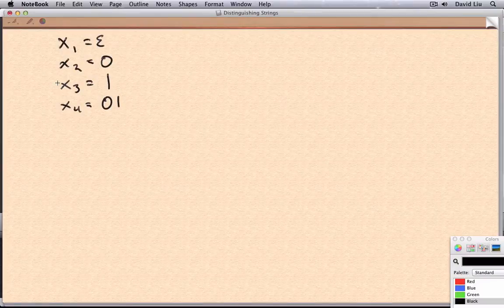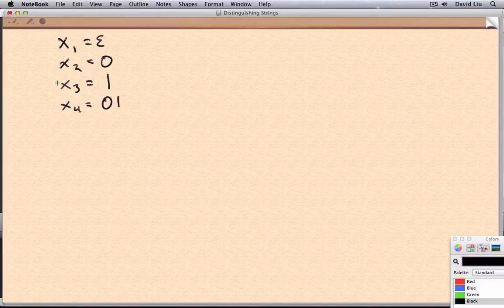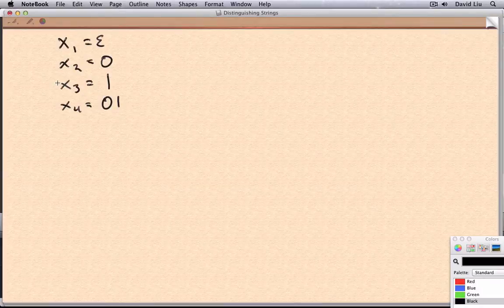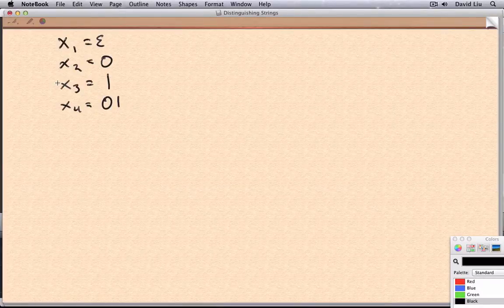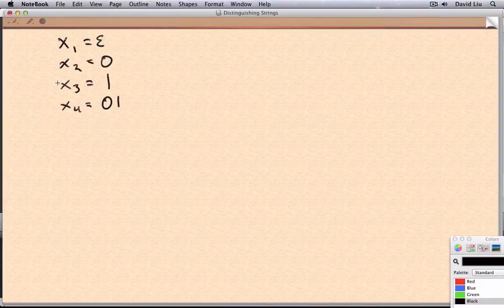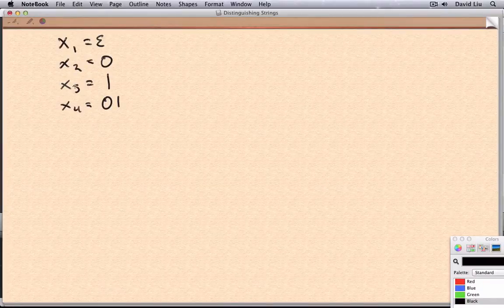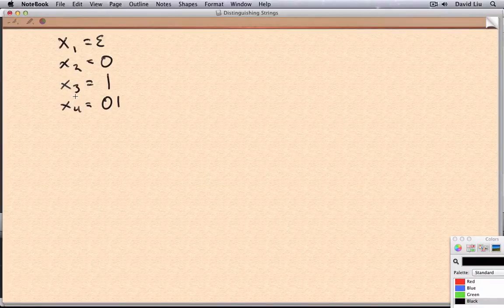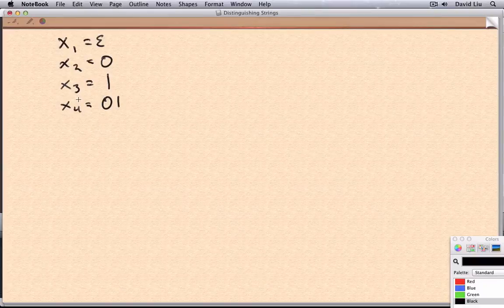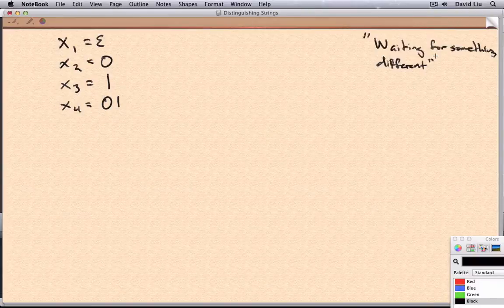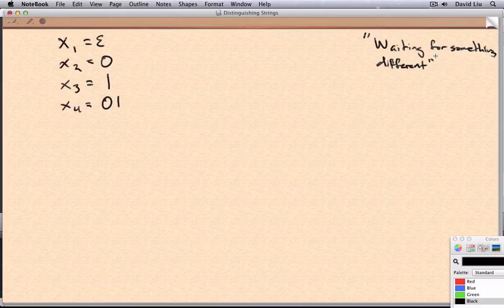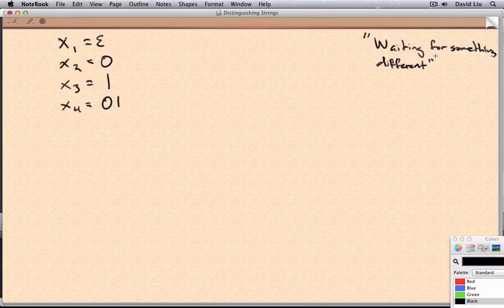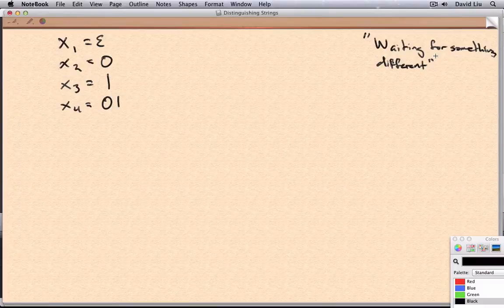These correspond to the four states of the DFA that we created in class, but there's actually another way of interpreting these. A more intuitive and helpful explanation is that each of these four strings is waiting for something different to decide whether or not it's in L. And actually, if you can understand what it is they're all waiting for, you can distinguish between any two very easily.